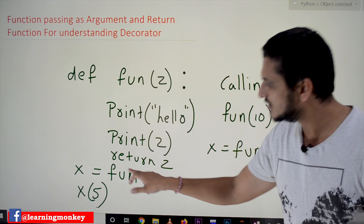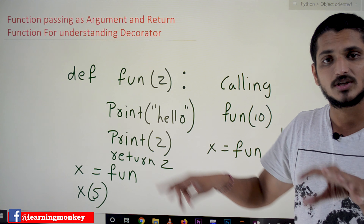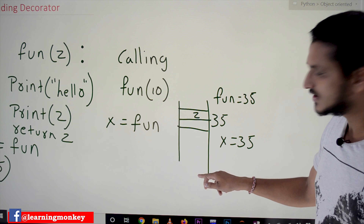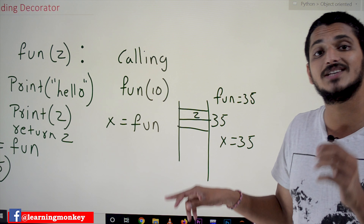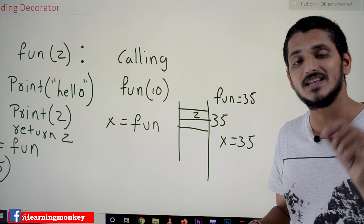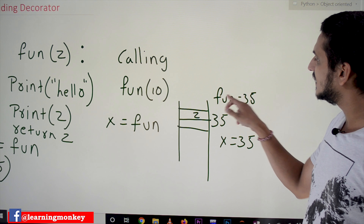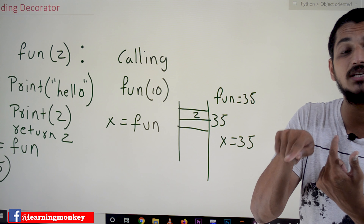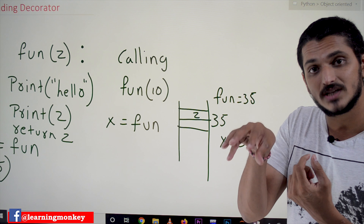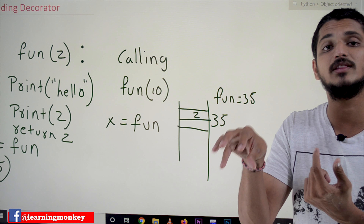x is equal to fun means it is creating a function object of this function. Let's assume this is our random access memory. In this RAM, it is creating a function object — let's say at address 35. The starting address 35 is given to the variable fun. Fun is referencing to the memory location 35, which means it is referencing to the function object at location 35.